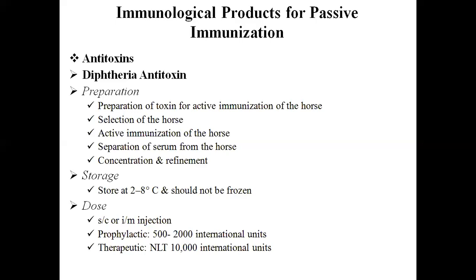The third stage is active immunization of the horse. Diphtheria toxoid is given by intramuscular route with gradually increasing doses, starting from about 5 ml. The second injection is given after an interval of two to three days, doubling the volume each time. By the end of this process, the last dose is around 600 ml.